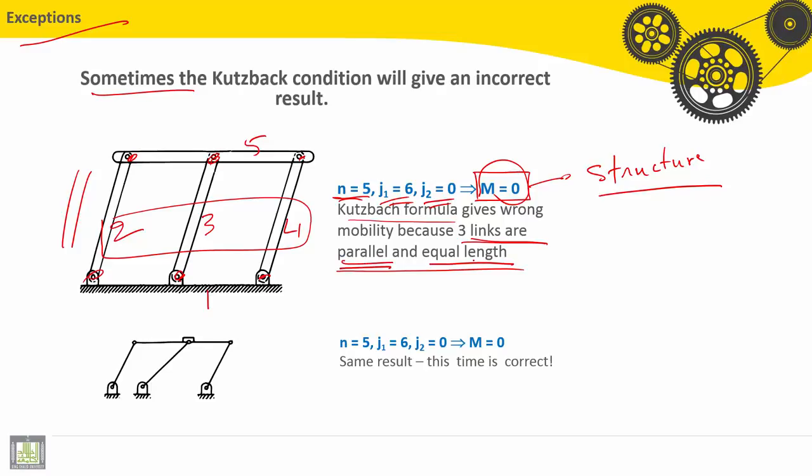Let's see the next example. The number of links L equals five. We have the ground, two, three, four, and five. And we have six pins: one, two, three, four, five, six. No higher pair joints, J2 equals zero. We'll get the same mobility number, M equals zero.